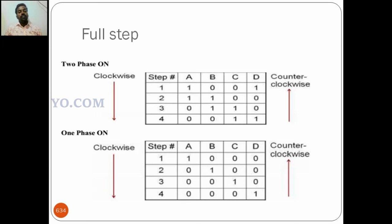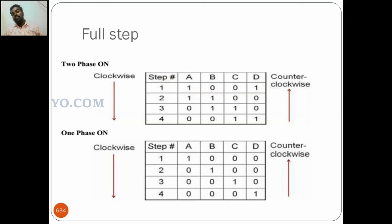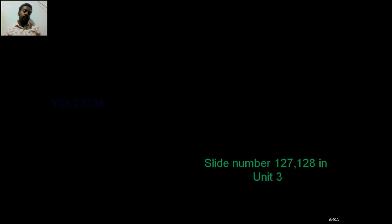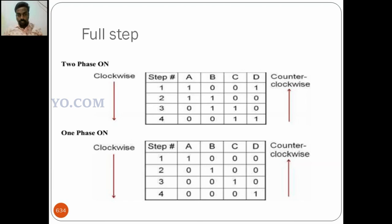For the stepper motor, two types of switching tables are used: two-phase on, where two coils (like A and D, then A and B) are switched on simultaneously, and single-phase on, where only one coil is energized at a time. Energizing more coils allows very fine micro-level movements. Keyboard interfacing and stepper motor interfacing are very important topics that frequently appear in university examinations. Thank you for watching and please study well.